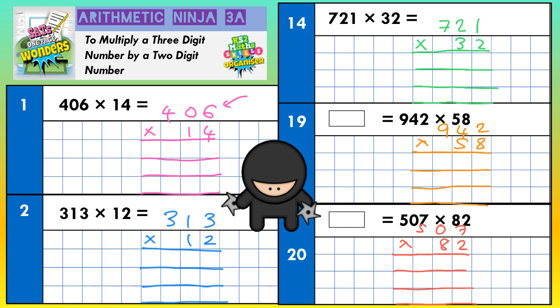It's important to realize what we're actually going to do on each of the three lines, so let's go back to question one. The top line is for dealing with the 4. The next line is for dealing with the 1, which actually means 10. And the bottom line is for adding it all together.